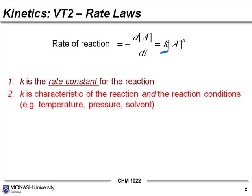So K is characteristic of the reaction conditions: temperature, pressure, solvent. If you manipulate those parameters, then you are actually going to change the value of K.